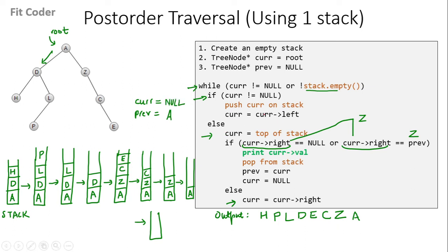In the next iteration, we check the value of `current`. `Current` is null and the stack is also empty, so this while loop terminates. And this is our post-order traversal that we have obtained.